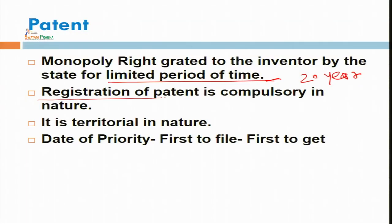One of the important concepts under registration is that registration is compulsory in nature — it is mandatory in India and any part of the world. By registration, the patentee will get so many rights. This inventor becomes a patentee; the title will change and he will get exclusive rights to use or to exploit his patent commercially, and he can restrain other persons from using that particular patent. That is why registration is compulsory.